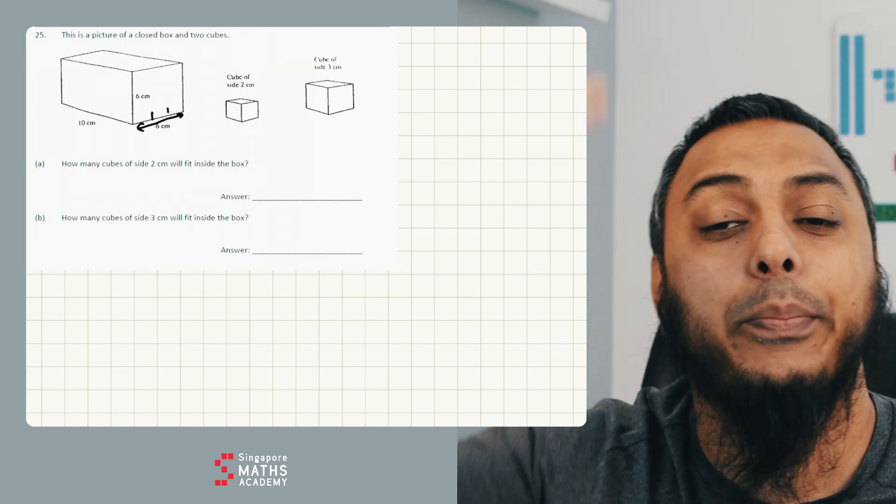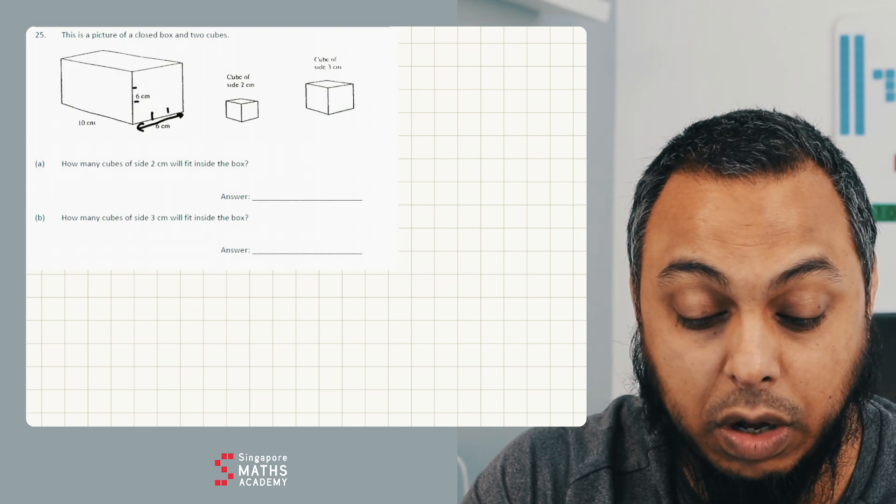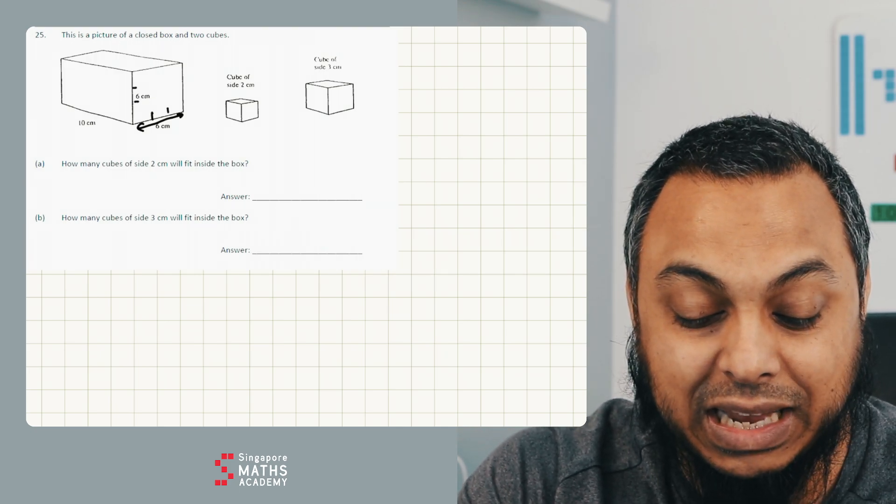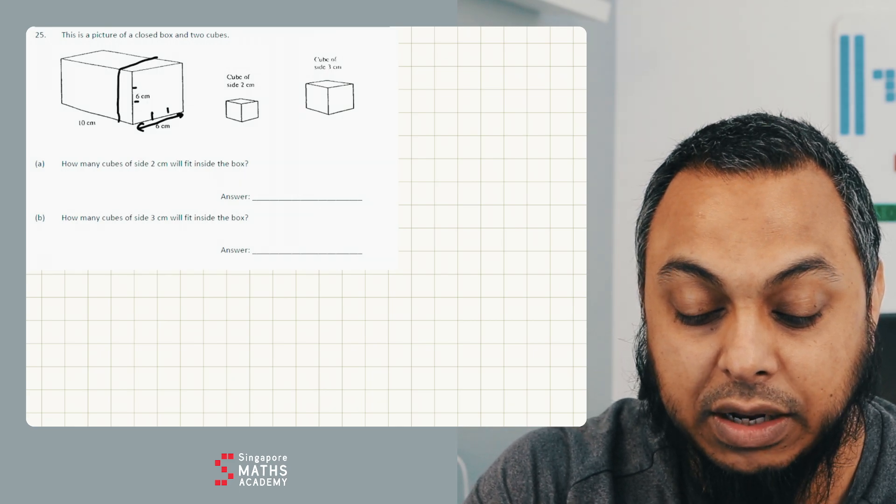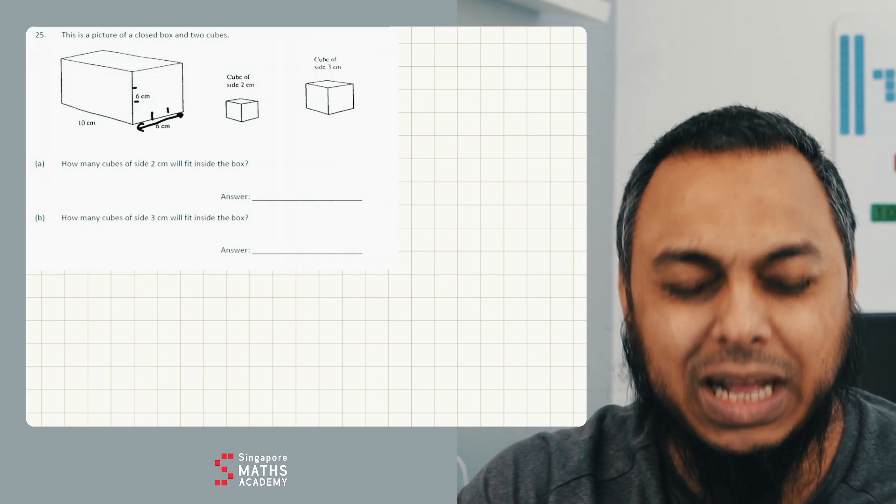How many can I go up in height? Well, that's 6 centimetres again. So that must mean I can also go up by 3. So I can have 9 cubes here. The first layer is going to be 9 cubes. So that's 9 cubes.